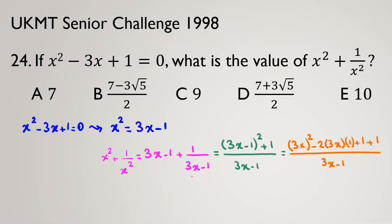Simplifying the numerator: 9x squared minus 6x plus 1 plus 1 gives 9x squared minus 6x plus 2, all over (3x minus 1). Now we have x squared again in the numerator, so we use the substitution x squared equals 3x minus 1 once more.